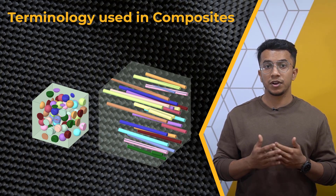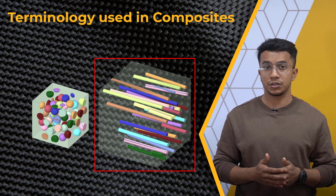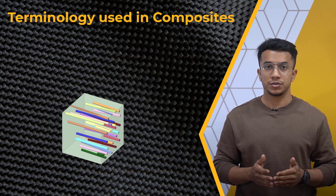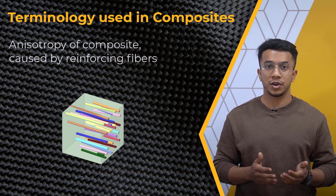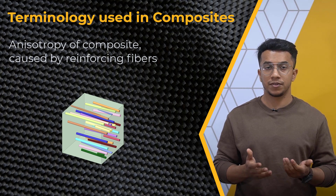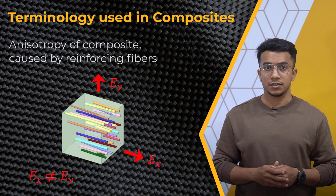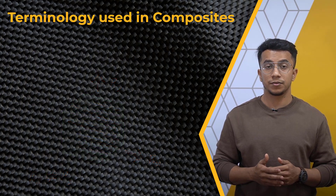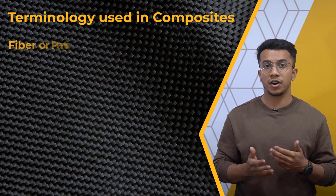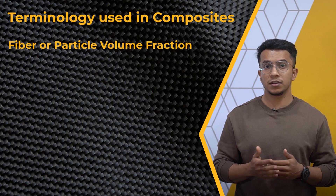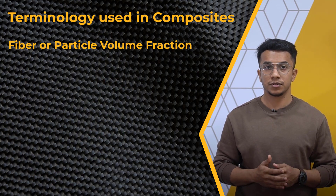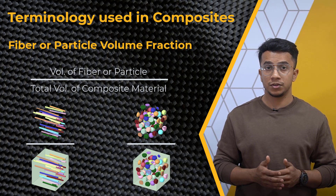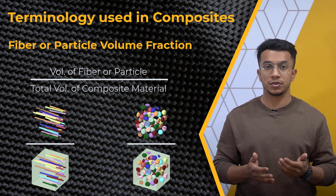Fiber is a common example of reinforcement. The anisotropy of the composite is easily caused by bonded or embedded reinforcing fibers — in essence, the stiffness differs in different directions. Fiber or particle volume fraction is another essential term you may encounter. It is the volume of all the fibers or particles with respect to the total volume of the composite material.